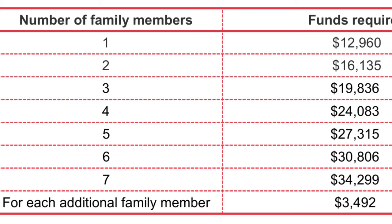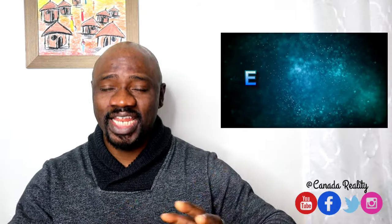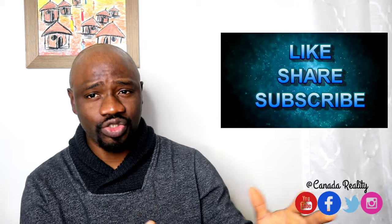If you're coming through skilled immigration — Express Entry or Provincial Nominee — here are the minimum proof of funds requirements: family of one needs at least 12,960 Canadian dollars; family of two needs 16,135; a family of seven requires approximately 34,299 Canadian dollars. For families of eight or more, add 3,492 dollars per additional person. For students, if you've paid your full tuition, an additional 10,000 Canadian dollars for living expenses should suffice to show you can cover transportation, feeding, and accommodation.